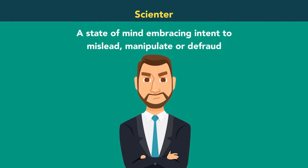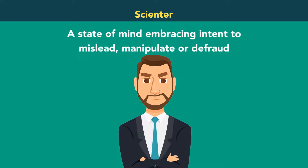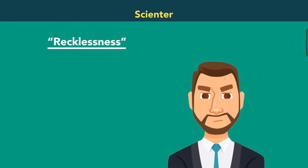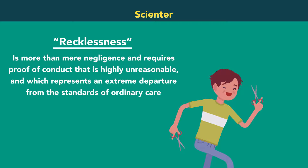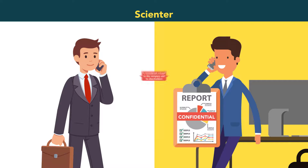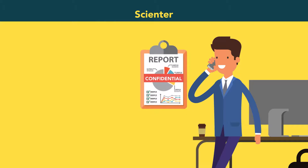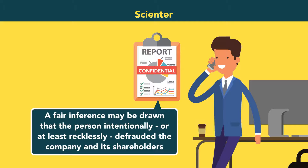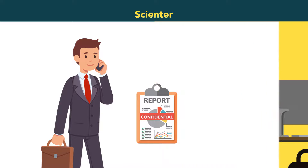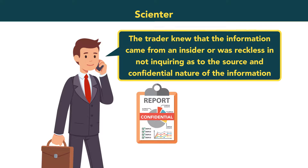Scienter. Scienter is a state of mind embracing intent to mislead, manipulate, or defraud. Scienter also embraces situations in which the person recklessly disregarded a known risk that its conduct is deceptive. Recklessness is more than mere negligence and requires proof of conduct that is highly unreasonable and which represents an extreme departure from the standards of ordinary care. In the context of insider trading, the act of trading on the basis of inside information is considered a fraud on the company and its shareholders. If one is in possession of material non-public information, a fair inference may be drawn that the person intentionally or at least recklessly defrauded the company and its shareholders. The scienter requirement becomes trickier when an insider tips someone who then trades — scienter would require that the trader knew that the information came from an insider or was reckless in not inquiring as to the source and confidential nature of the information.